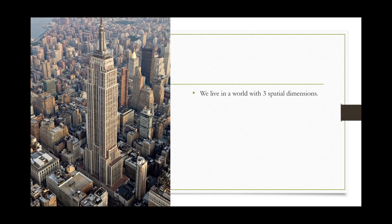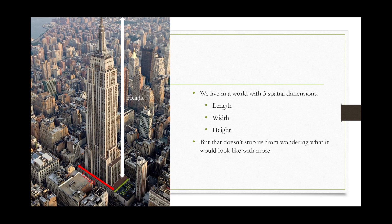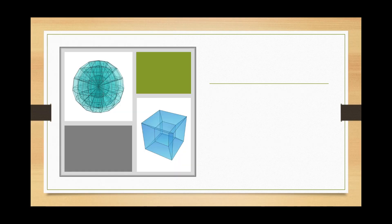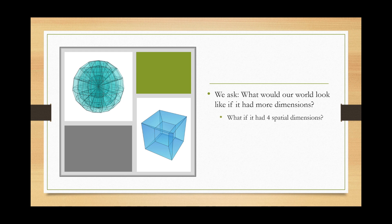We humans live in a world with three spatial dimensions: length, width, and height. But is our curiosity limited to these three dimensions? No. We wonder what would our world look like if there were more dimensions. We ask, what if there were more than three dimensions? What if instead of three, there were four spatial dimensions? What would our world look like then?